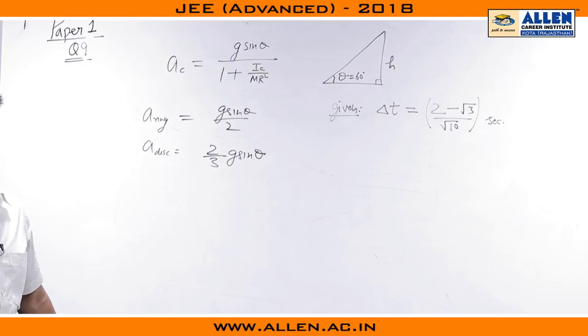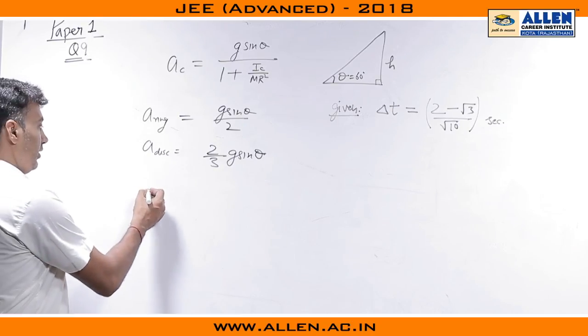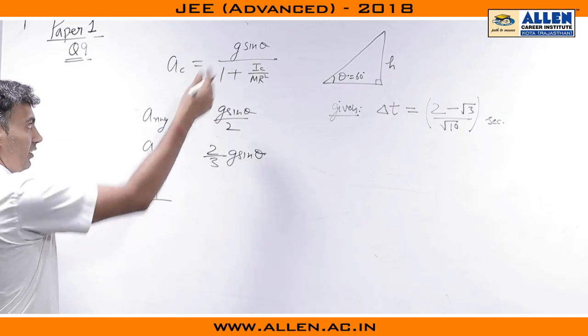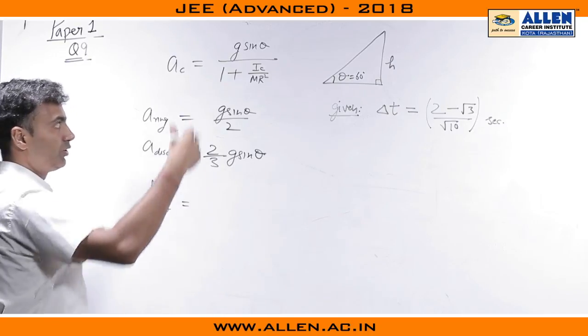Since both bodies had to come down onto the same inclined plane, using the equation s equals u t plus half a t square, the downward distance should have been h by sin theta. There was no u.